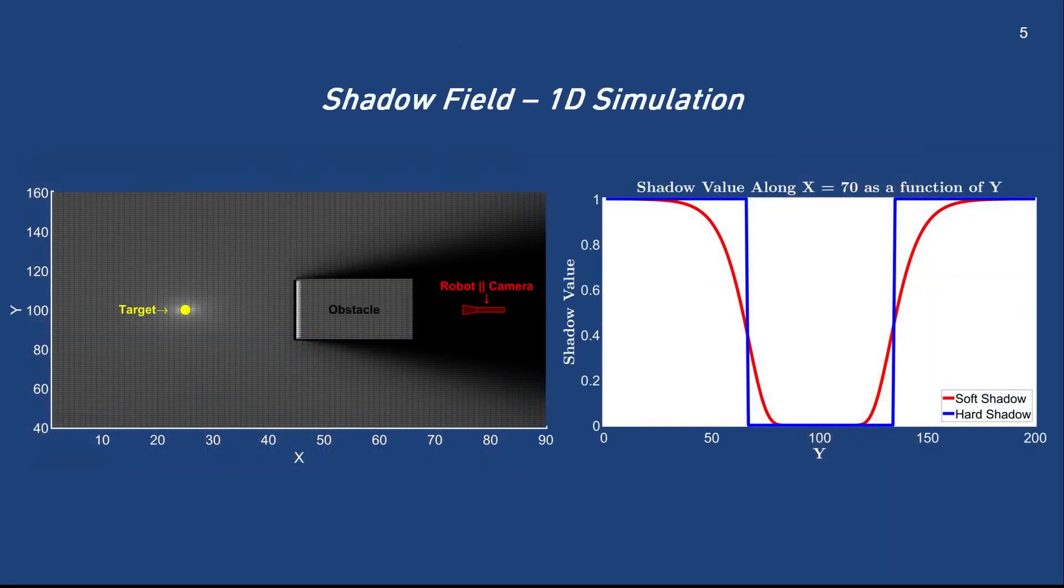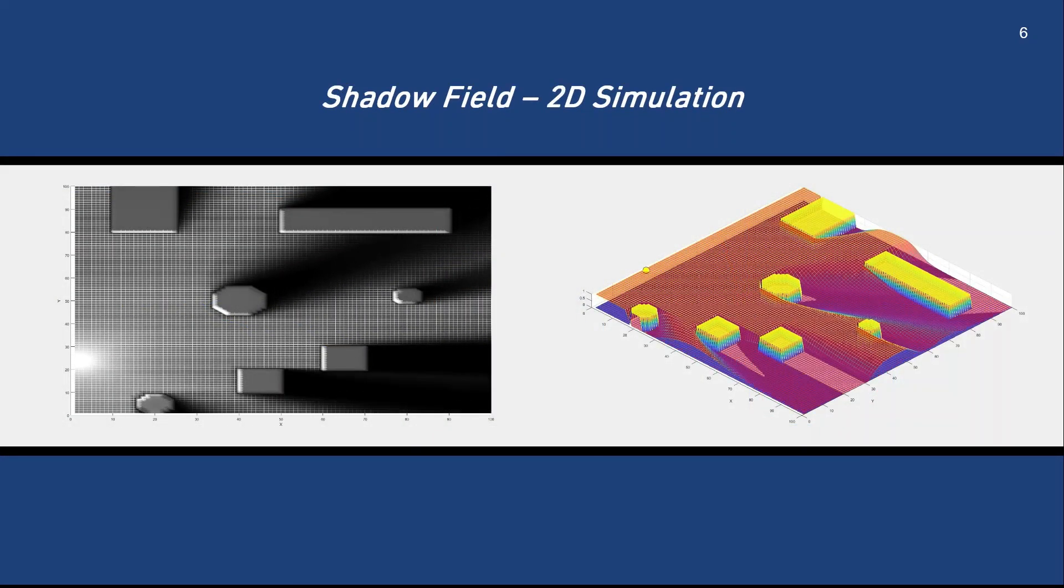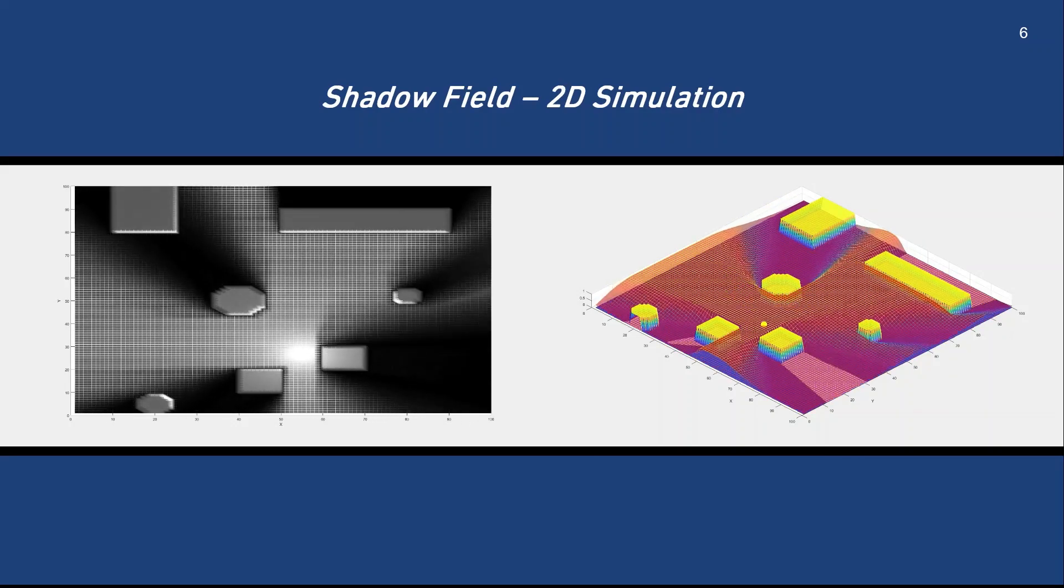As a matter of fact, our proposed Shadow Field provides smooth and continuous soft shadow approximations of hard shadows. In this illustration, we compare the soft shadows computed with our algorithm against hard shadows defined by the two blue lines for the illustrated obstacle along x equals 70. Extending to the 2D case, we demonstrate the shadow field mesh for a 2D environment.